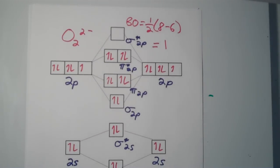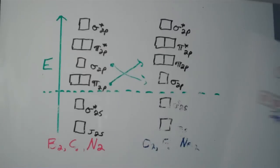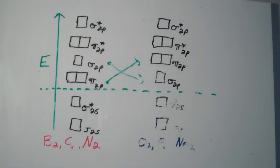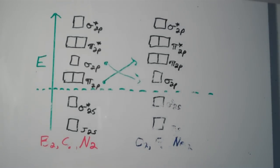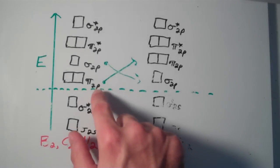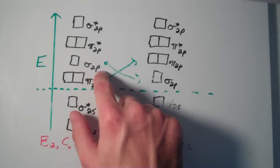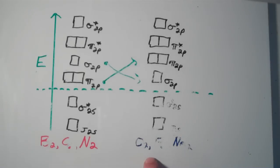I hope this video has helped. The main point I wanted to drive home is that for boron, carbon, and nitrogen, the energy ordering of the pi 2p and sigma 2p molecular orbitals is different from what it is for O2, F2, and Ne2. Good luck.